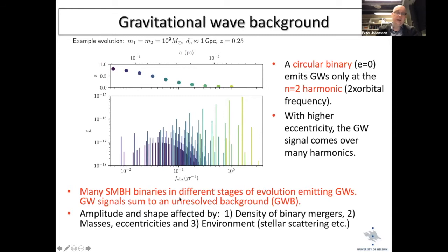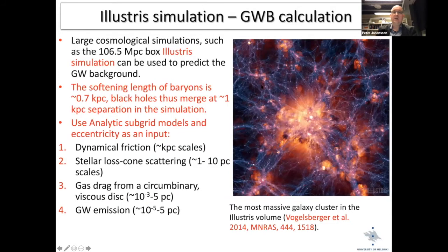The amplitude and shape of the gravitational wave background is affected by the density of binary mergers, their masses and eccentricities, and importantly the environment — stellar scattering interactions between the black holes and stars. This has already been studied in global simulations like the Illustris simulation, which uses a large cosmological 106.5 Mpc box run with AREPO, though with a gravitational softening of 0.7 kiloparsecs.